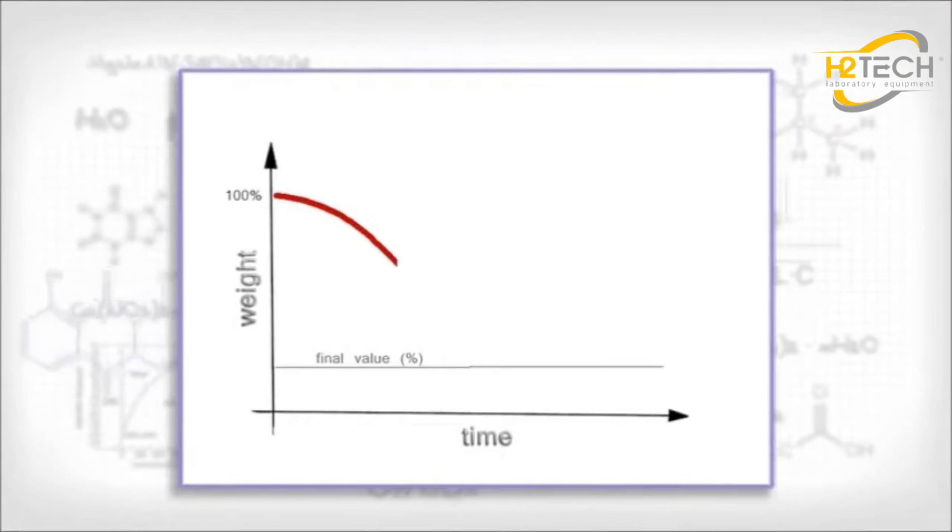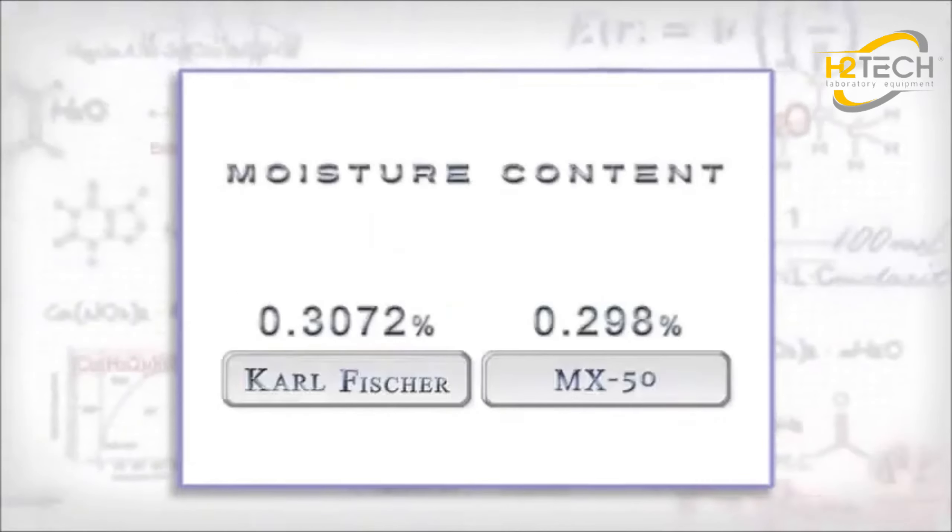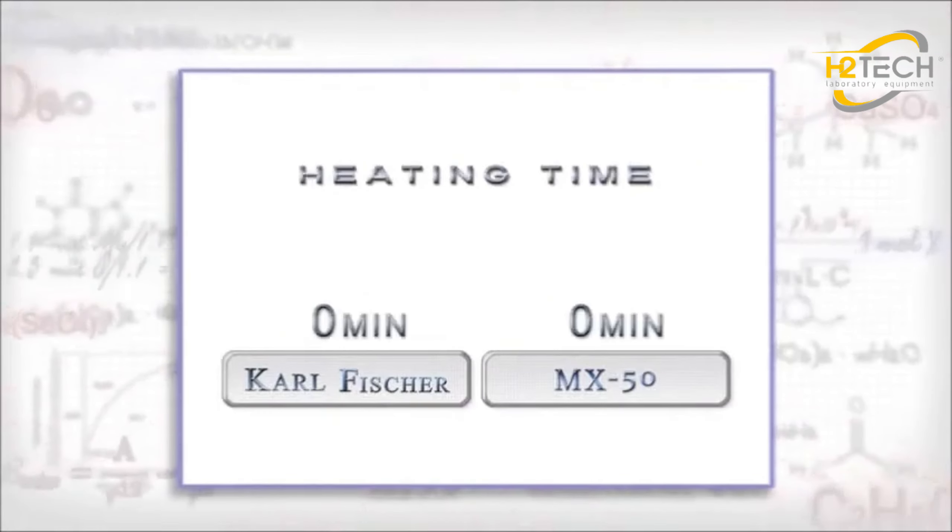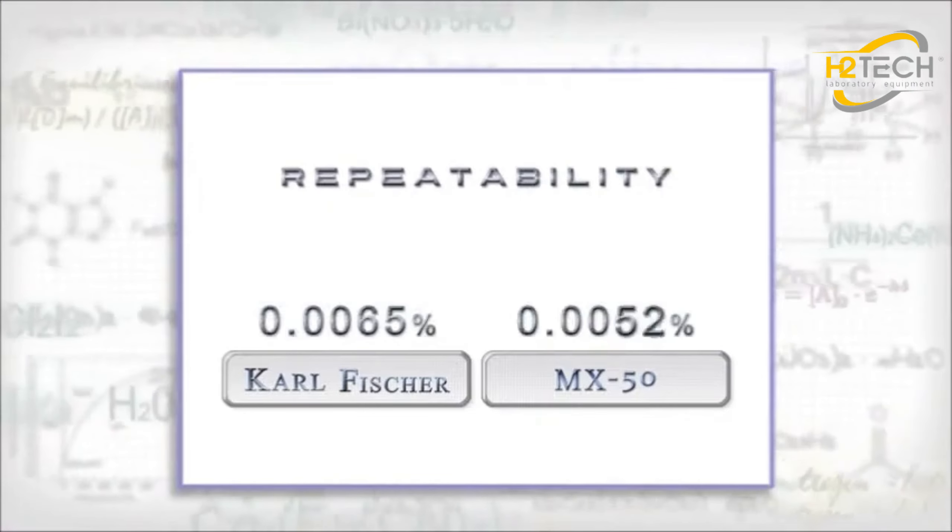A&D analyzers use the thermo-gravimetric or loss on drying principle and offer the accuracy of the Carl Fischer technique, but in less time and with better repeatability.